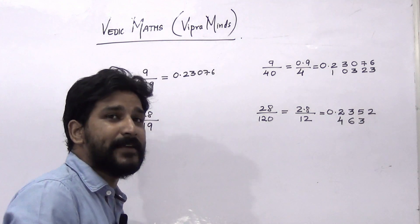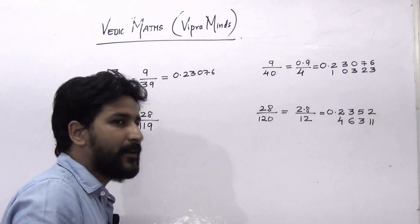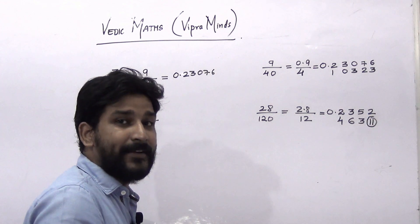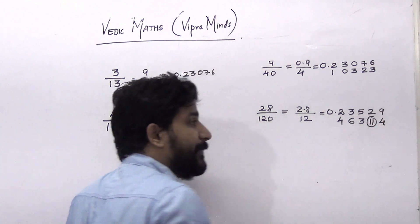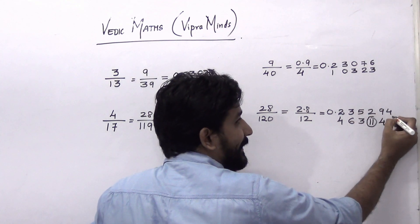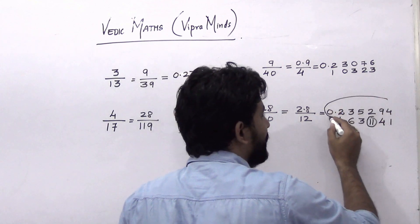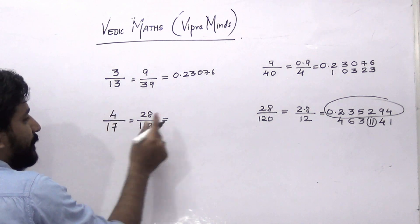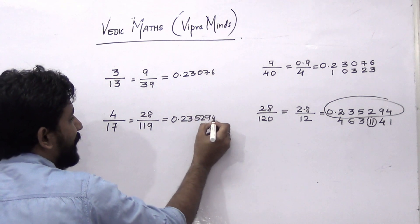So 12 into 2 is 24, remainder will be 11. The next number to divide — consider the whole value 11 and 2, that is 112. So 12 into 9 is 108, remainder will be 4. Next is 49 — 12 into 4 is 48, remainder will be 1, and so on. So the answer: 4 divided by 17 is nothing but 0.235294 and so on.